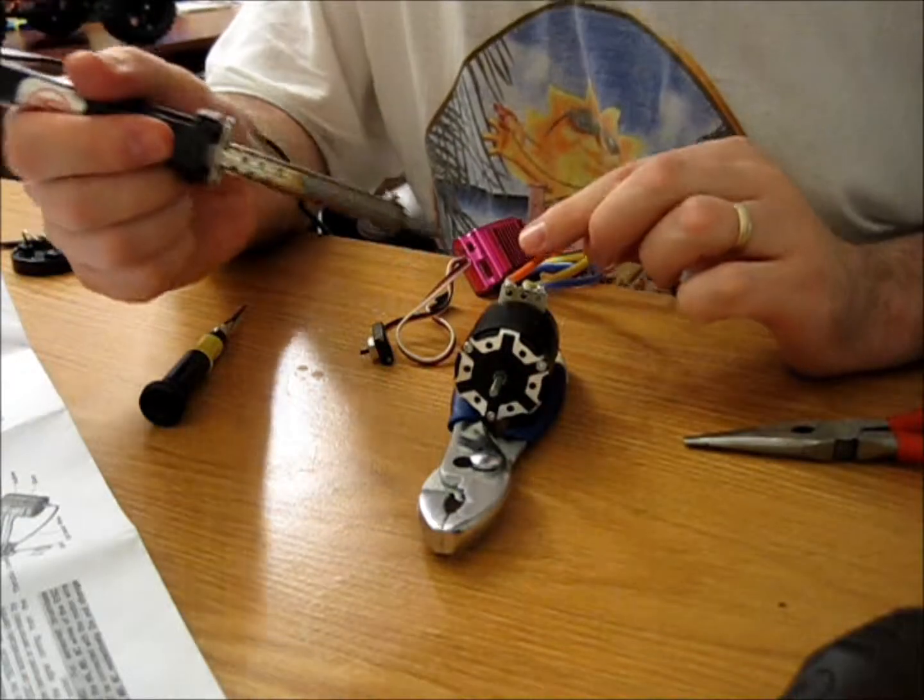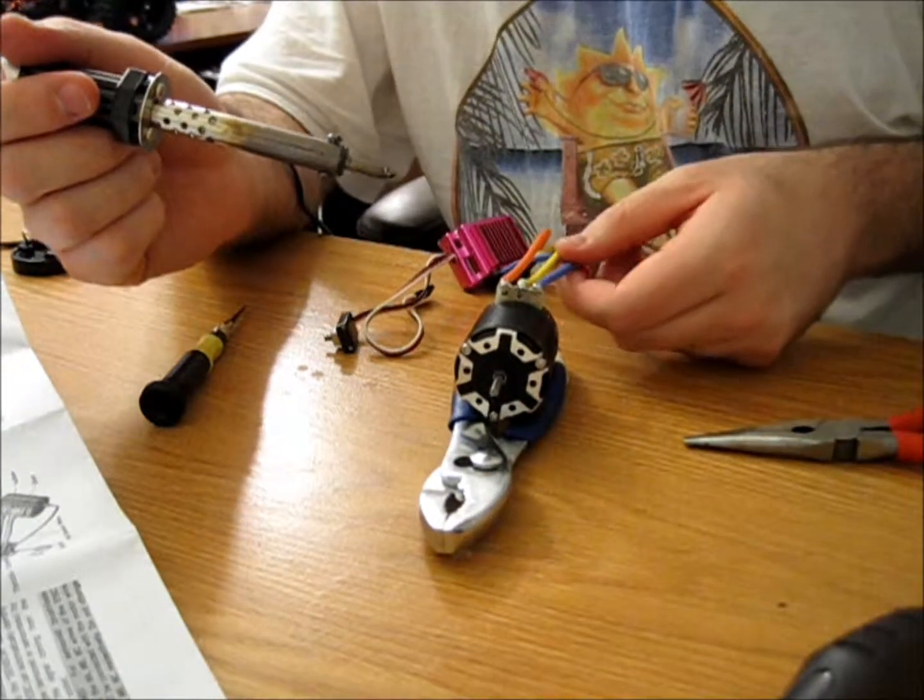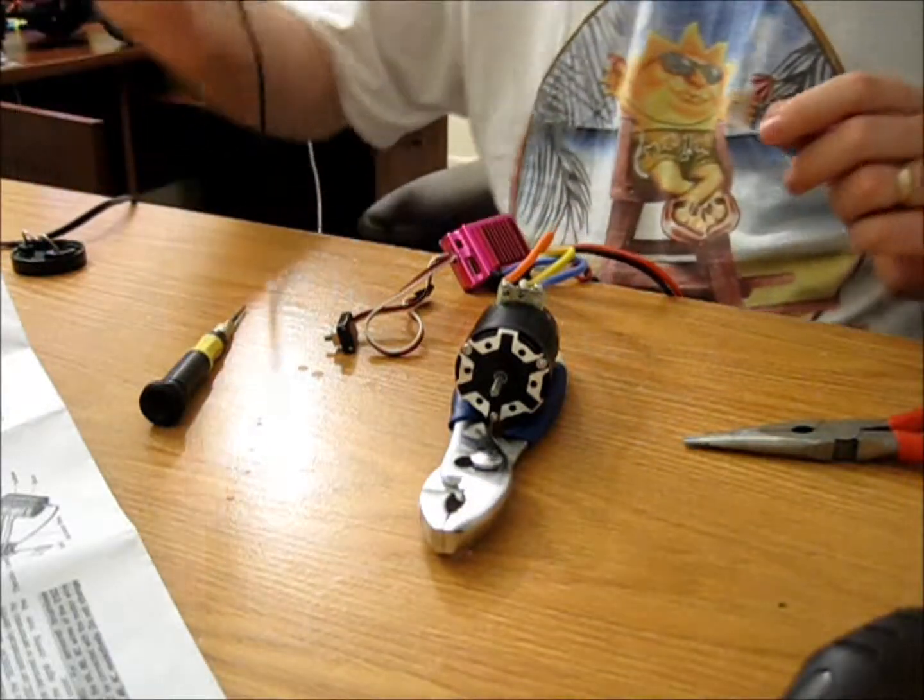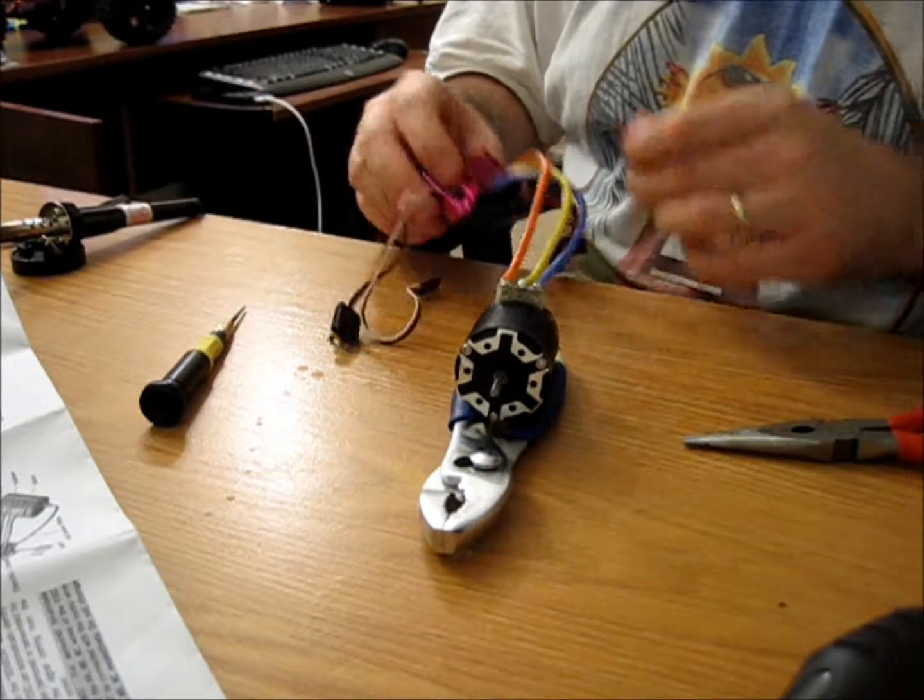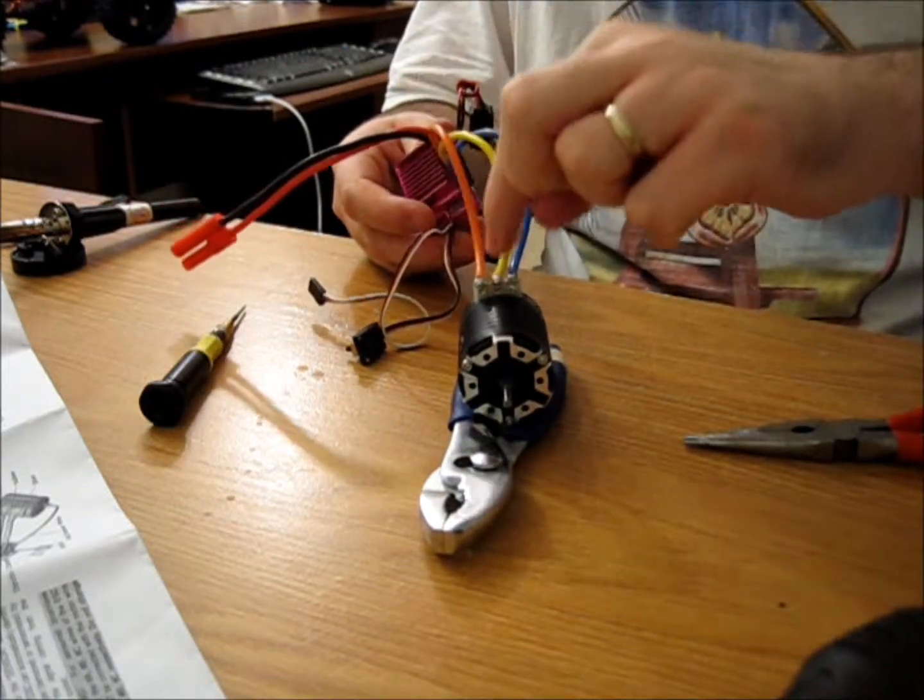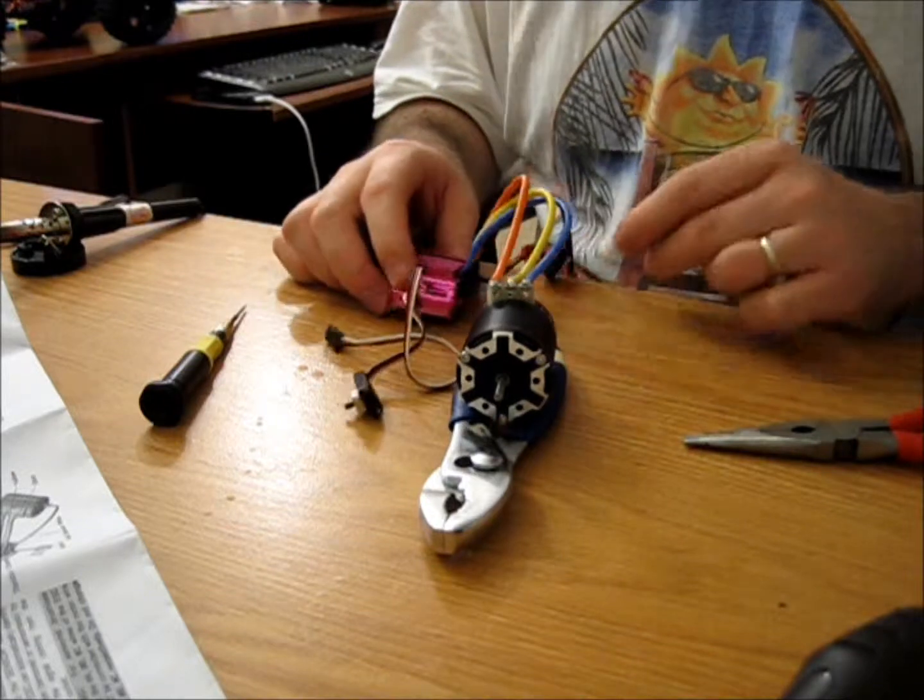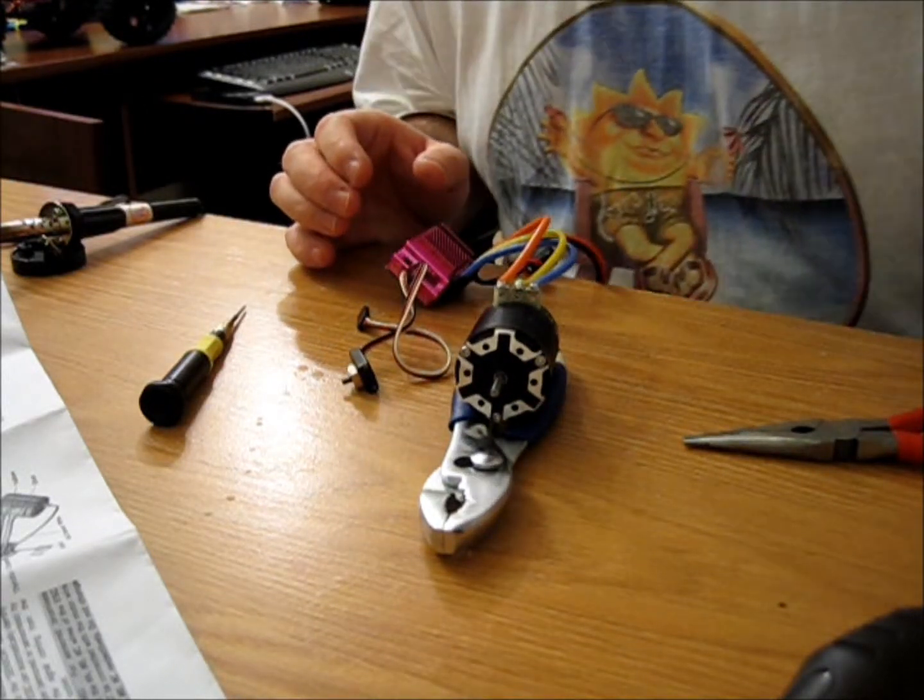There you have it, first time wiring up an ESC and first time wiring up a motor, a brushless motor at that too. So C is orange, C is orange, B is yellow, B is yellow, A is blue, A is blue. All right, well, that is that for now.